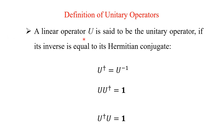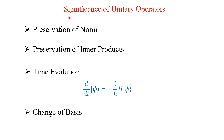A linear operator U is said to be the unitary operator if its inverse is equal to its Hermitian conjugate. That means U dagger must be equal to U inverse. That means U U dagger equals the identity matrix, or U dagger U equals the identity. This is the definition for unitary operator.